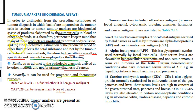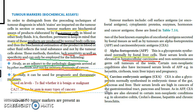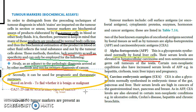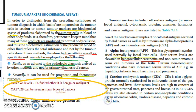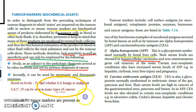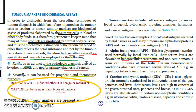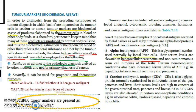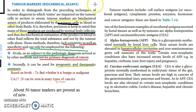You cannot solely depend on tumor markers for diagnosis. They are used as an adjunct to pathologic diagnosis, for prognosis, and to distinguish benign from malignant based on levels. Another problem is that many tumor markers can come from many types of cancers and also from normal body cells. As of now, around 50 tumor markers exist, and the list keeps growing.